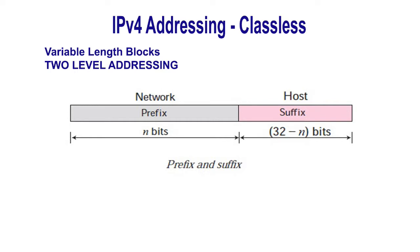In classful addressing, an IP address is divided into NetID and HostID. The NetID defined the network and the HostID defined the host in the network. The same idea can be applied in classless addressing. When an organization is granted a block of addresses, the block is divided into two parts: the prefix and the suffix. The prefix plays the same role as the NetID, and the suffix plays the same role as the HostID. All addresses in the block have the same prefix, and each address has a different suffix.